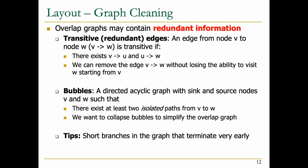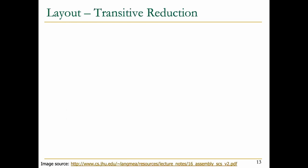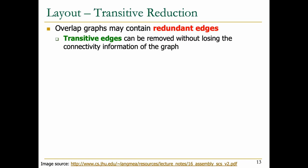There is one more step in layout graph cleaning, which is removing the tips. In the graph, some branches may terminate very early without giving us any information or taking us to the end of the genome assembly. Let's go over what the transitive reduction looks like. Overlap graphs may contain redundant edges, and our goal is to remove them. Transitive edges can be removed without losing the connectivity information of the graph.